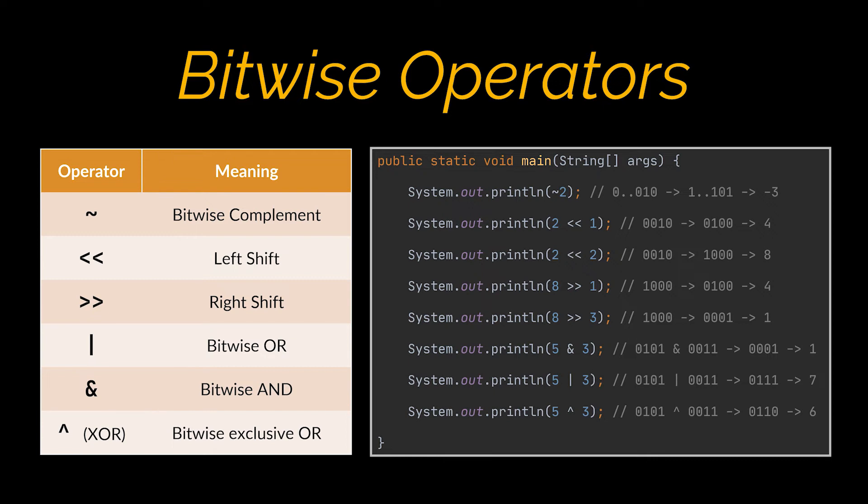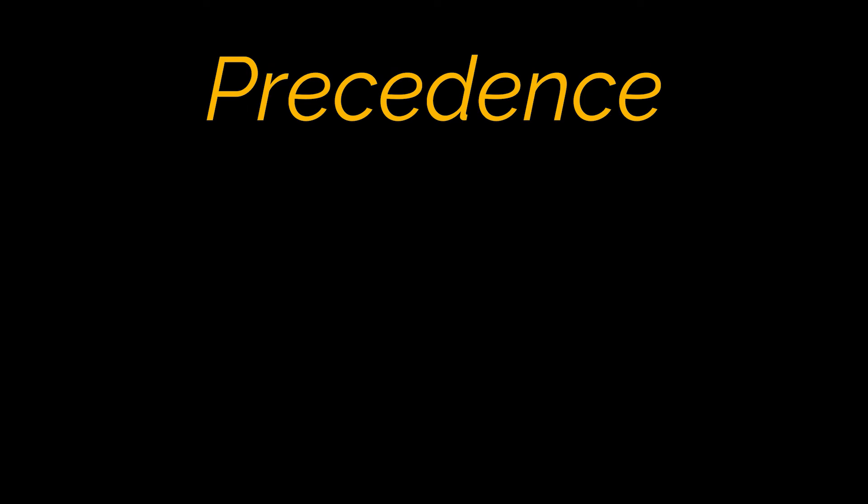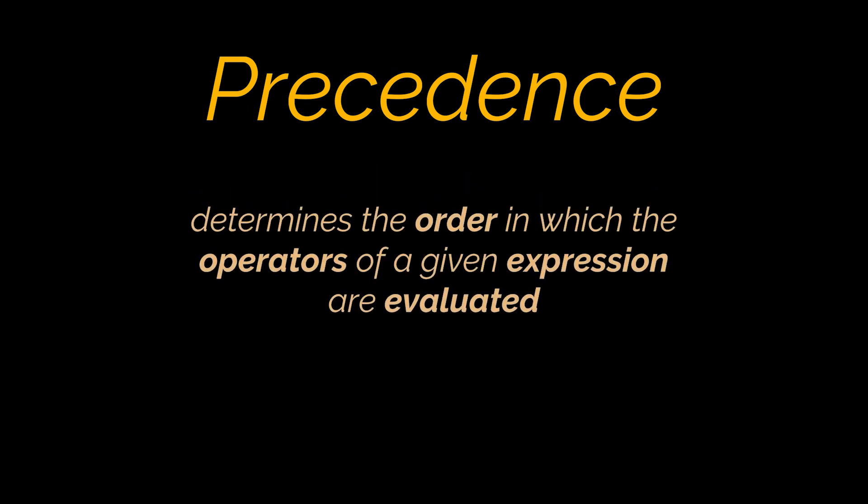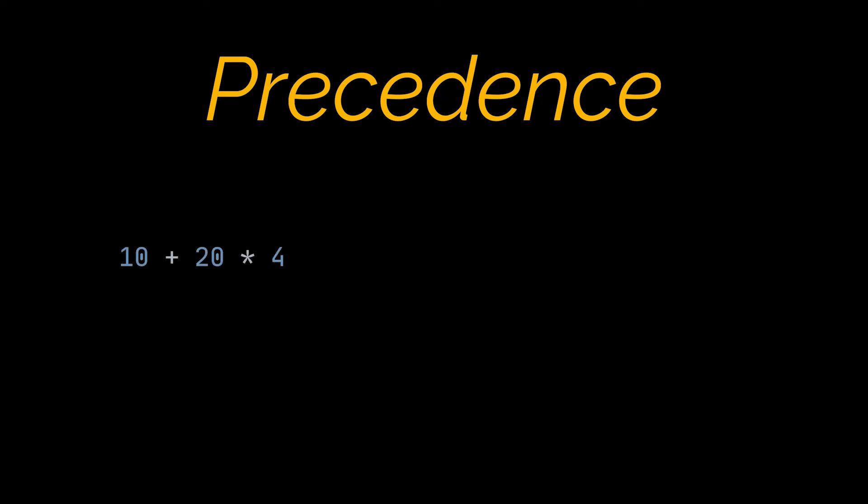Now that you have an idea about all the operators provided by Java, let's tackle the main topic, the precedence of these operators. And simply put, the precedence of an operator determines the order in which the operators of a given expression are evaluated. To understand what I mean, take a look at the following statement. Mathematically, we know that the multiplication has a higher priority than the addition, hence the following equation will be equivalent to this one and not that one. This means that the multiplication sign has a higher precedence than the add sign, and consequently while calculating a given statement, the evaluation of the multiplication will precede that of the addition.